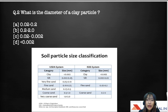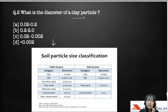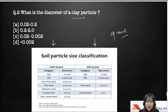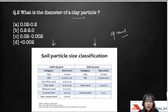Moving to the next question: what is the diameter of the clay particle? The options are A) 0.02 to 0.2, B) 0.2 to 2.0, C) 0.002 to 0.02, D) less than 0.002. Using the International Soil Science Society (ISSS) system: clay is less than 0.002 mm, silt is 0.002 to 0.02 mm, fine sand is 0.02 to 0.2 mm, coarse sand is 0.2 to 2 mm, and gravel is more than 2 mm. The right answer is D — less than 0.002 mm.